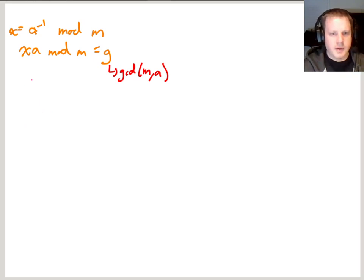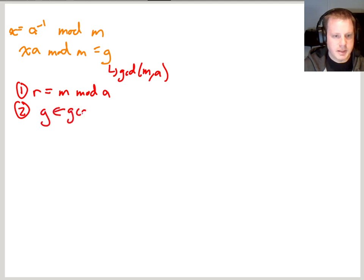And so how does the Euclidean algorithm work here is we compute R, which is M mod A. So M mod A is the first thing that we compute. And then we recursively get g as the gcd of A and R, which is the same as the gcd of M and A, because of what we saw from the regular Euclidean algorithm.